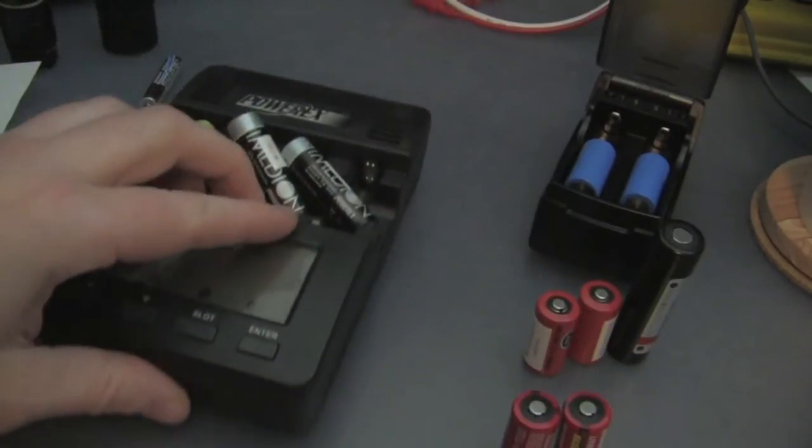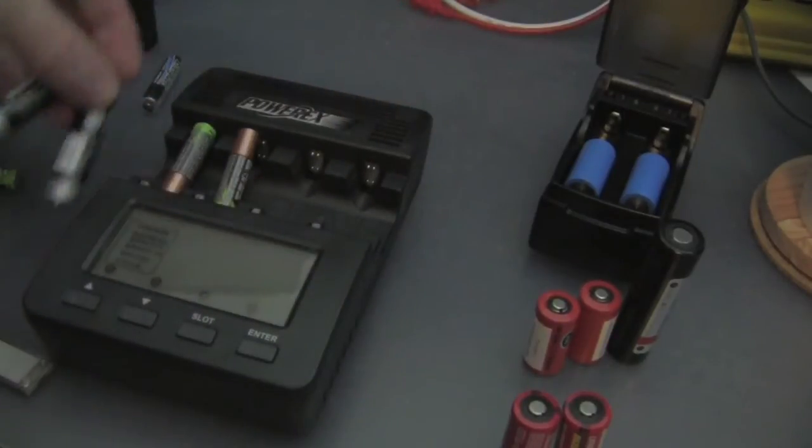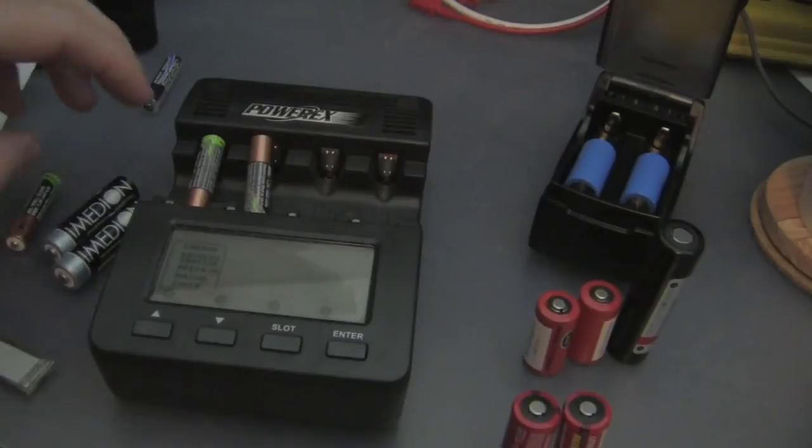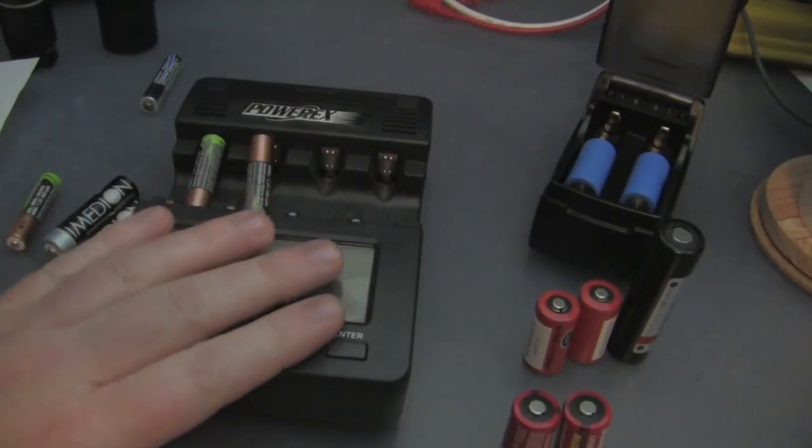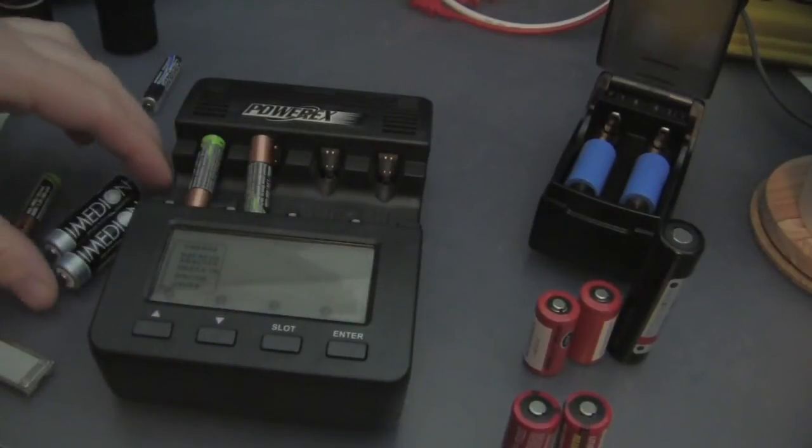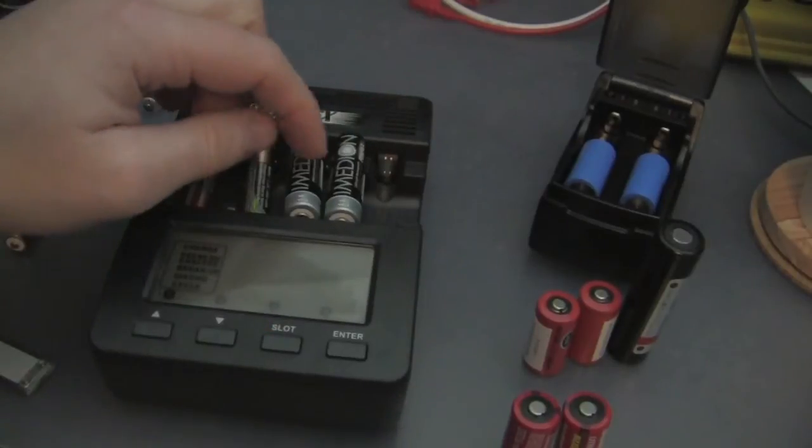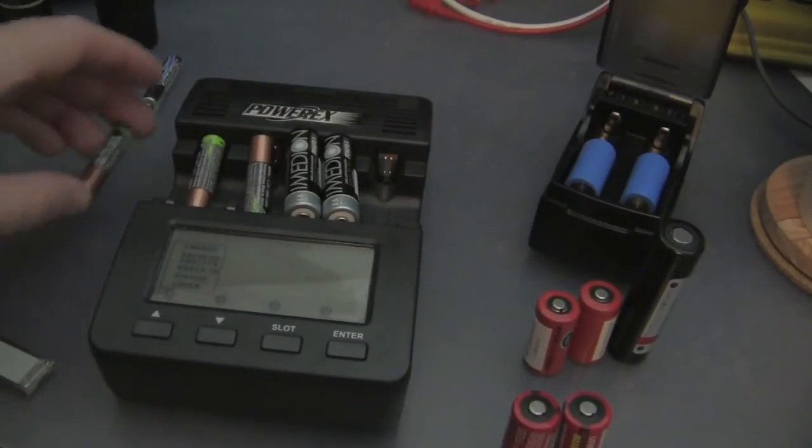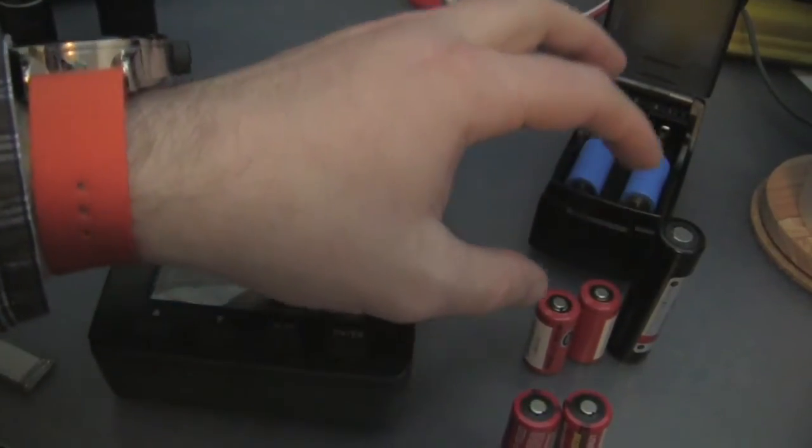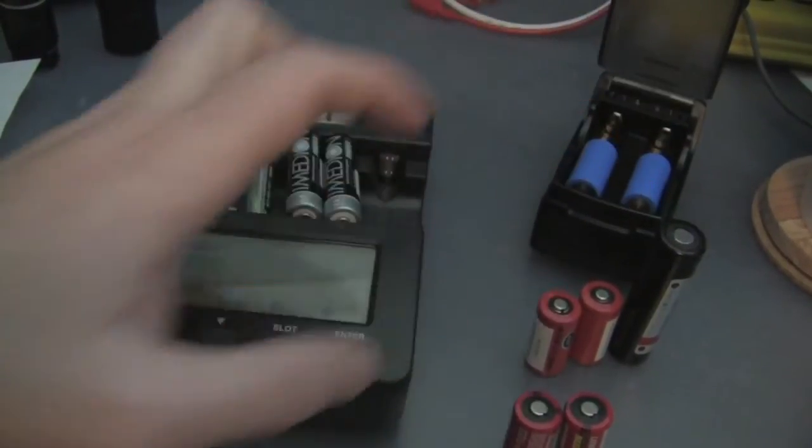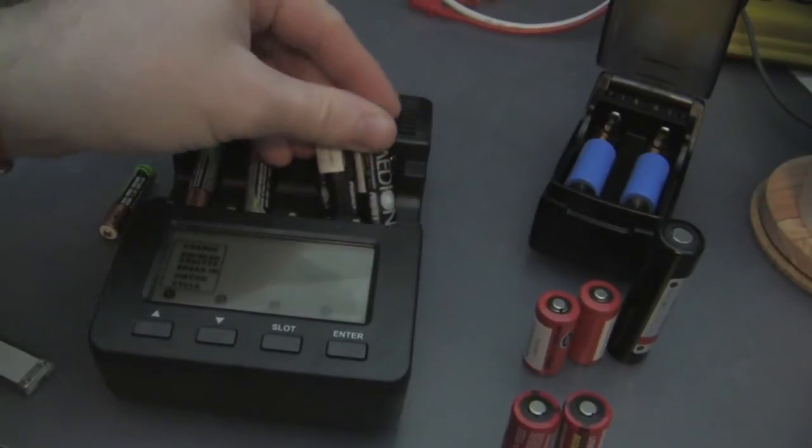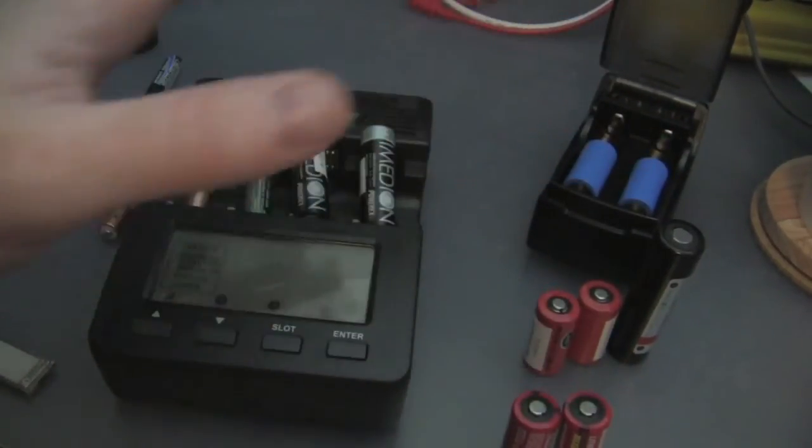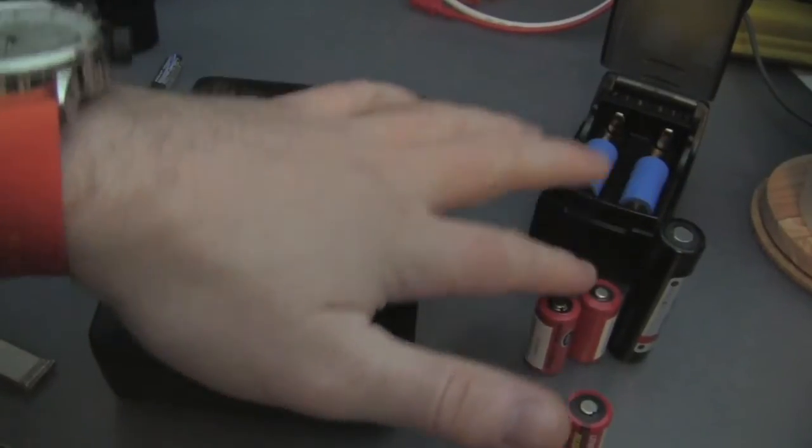So let's move over to the nickel metal hydride batteries. This is the PowerX C9000 or Maha C9000. This charges four nickel metal hydride batteries each independently. Nickel metal hydride unlike lithium want to be discharged fully. So every few cycles on this maybe every 30 you drain them completely and charge them back up. Over here on the lithiums you use them a little bit and top them off whenever you can. This charger to do a full charge takes many hours. This charger to do a charge roughly three hours. These batteries get hot, these batteries get warm.